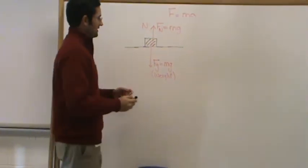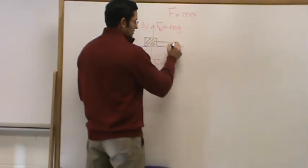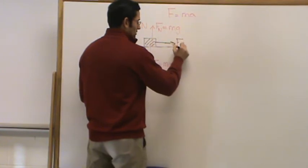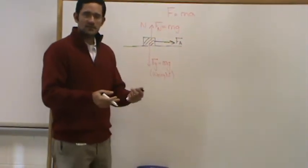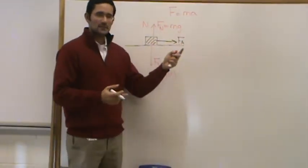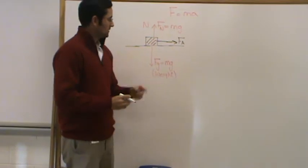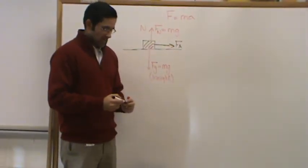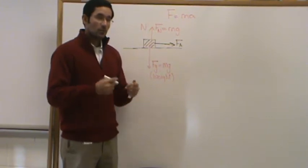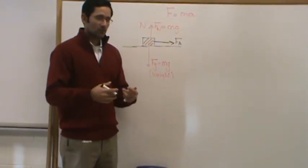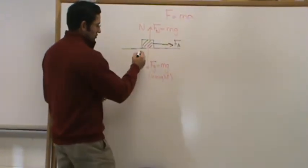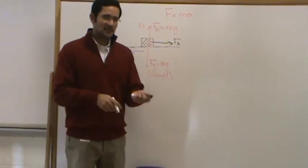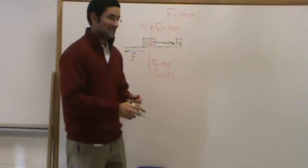If you have a force pulling this object to the right — let's say we are pulling with a force of 10, 15, or 20 Newtons, whatever applied force (FA) we apply — if the box is not moving, that means there is a force of friction in the opposite direction. You have two types of friction: static friction and kinetic friction.